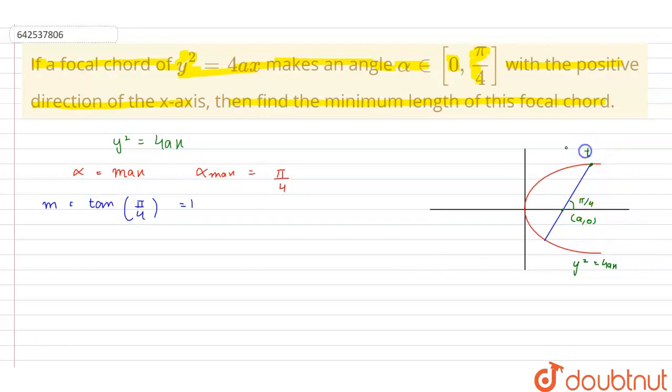So, let this point be t, so the coordinates of this point will be at², 2at and we have the focus as a, 0.